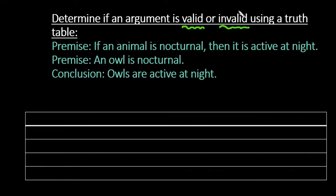So what we have here is the premise that if an animal is nocturnal, then it is active at night. We have a second premise that says an owl is nocturnal, and our conclusion is that owls are active at night.